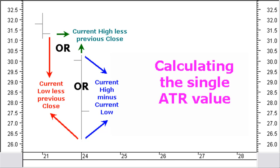Like most technical analysis programs, MetaStock has a predefined ATR indicator. To create a trailing stop based on the ATR value, you need to calculate the maximum allowed loss based on the ATR value multiplied by a factor.